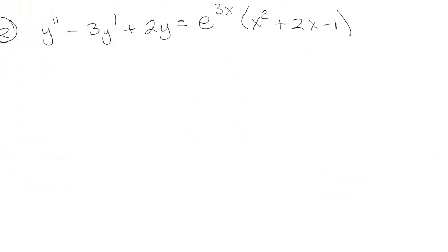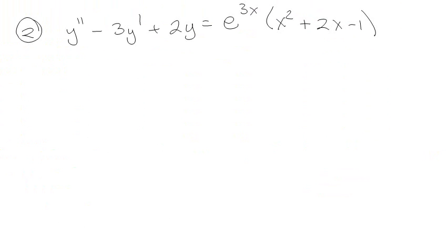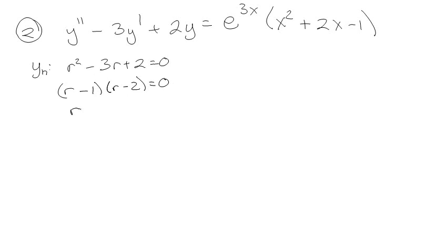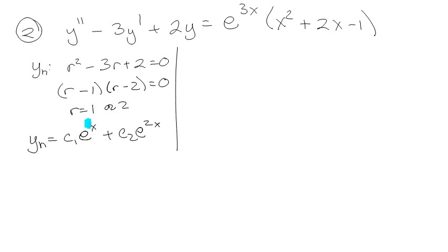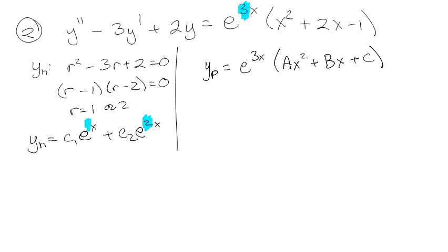Let's try this one. Homogeneous solution first. The characteristic equation is r² minus 3r plus 2, which factors as r minus 2 times r minus 1, giving r equals 1 or 2. So the homogeneous solution is c₁e^x plus c₂e^(2x). The good news is this is a 1, this is a 2, and the forcing function has a 3, so I'm made in the shade on my particular solution. I can just guess e^(3x) times (ax² + bx + c).